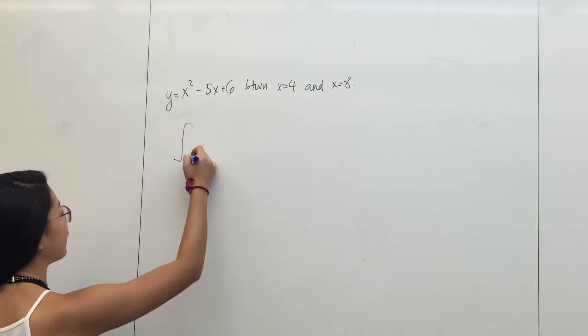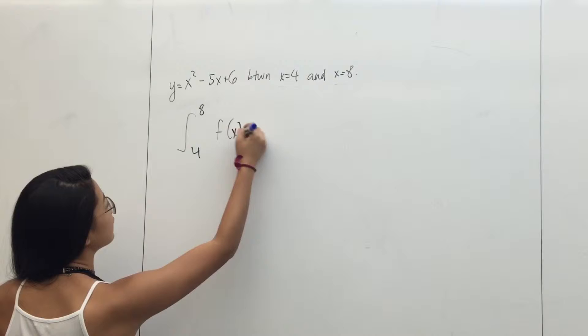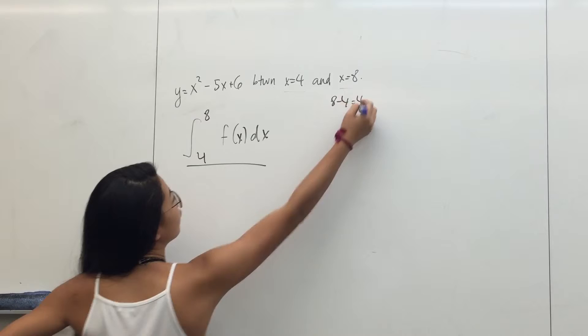Okay, so to find the average value of this function, the first thing you want to do is write that as a definite integral. So a equals 4 and b equals 8 of f of x times dx, and you're going to divide that by 8 minus 4, which is 4.